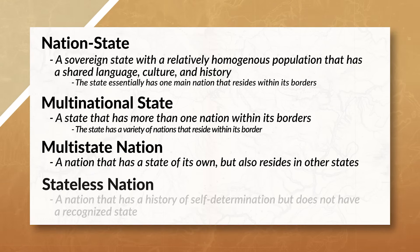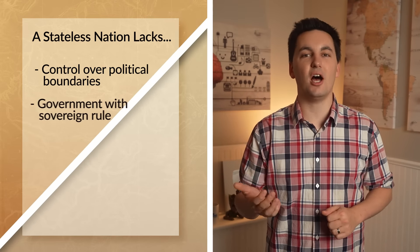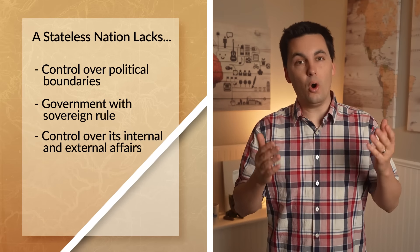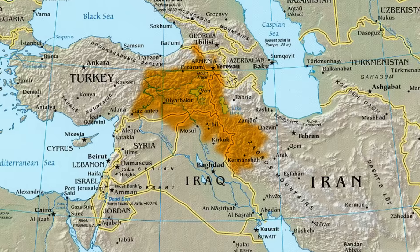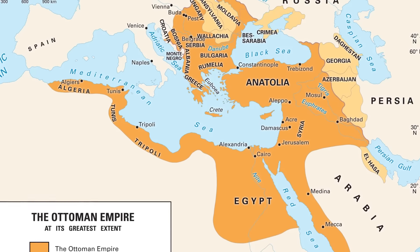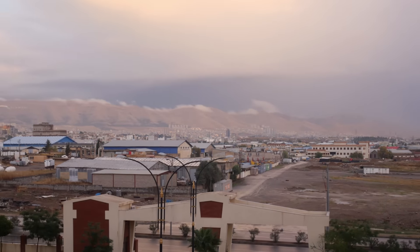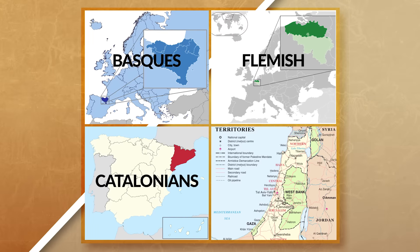Speaking of the Kurds, they're also an example of our next type of political organization, which is a stateless nation. This is when a nation has a history of self-determination, but does not have a recognized state. The nation lacks one or more of the following: control over their political boundaries, a government with sovereign rule, control over its internal and external affairs, or recognition from other states. If we look at the Kurdish nation, we can see they speak Kurdish, their religion is Islam, and the Kurdish people do not consider themselves to be Arab — they consider themselves to be Kurdish. The Kurds have a historical claim to the proposed nation-state of Kurdistan, which was originally proposed after the Ottoman Empire fell. However, before Kurdistan could be an official state, the Turks expanded their land and took over the soon-to-be Kurdistan. Today, the Kurdish nation still exists, however they still do not have a recognized state, making the Kurds a stateless nation. And since the Kurds are also currently spread between multiple states, they're also a multi-state nation. Other examples of a stateless nation would include the Basque, the Flemish, the Catalonians, and the Palestinians.